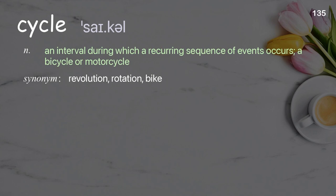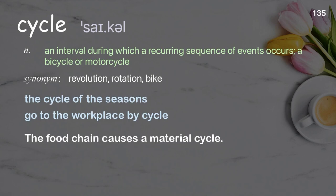Cycle: an interval during which a recurring sequence of events occurs; also a bicycle or motorcycle. Examples: the cycle of the seasons; go to the workplace by cycle; the food chain causes a material cycle.